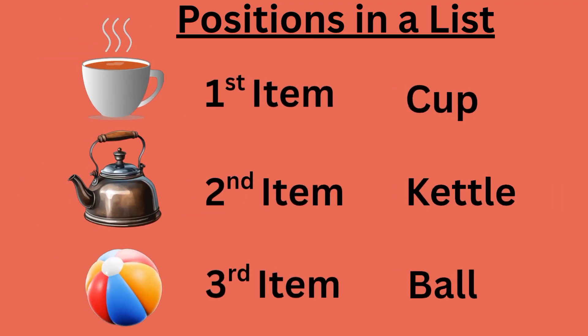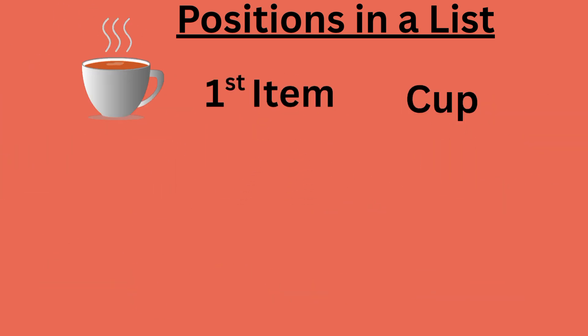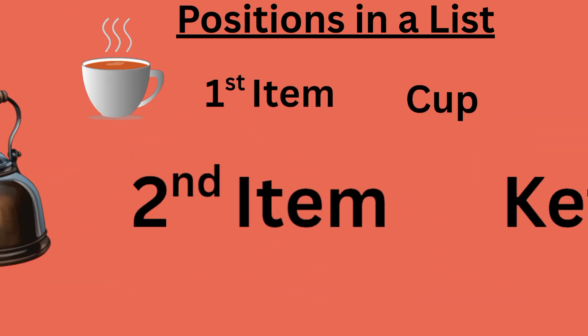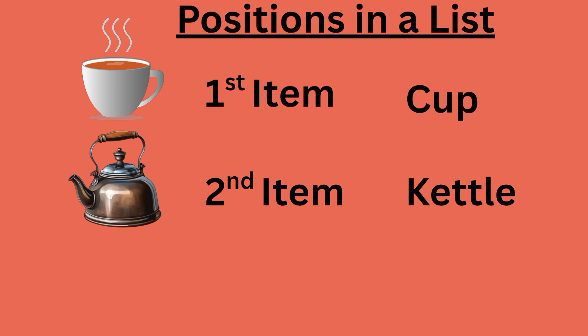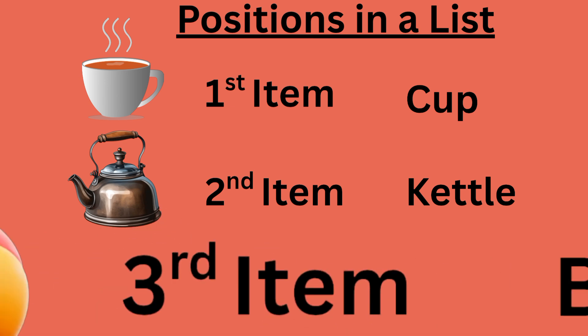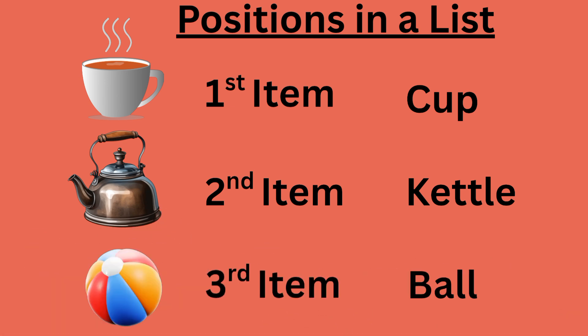A list can also be described by ordinal numbers. For example, in this case, we are referring to a list of objects, where the first item is a cup, the second is a kitten, and the third is a ball.